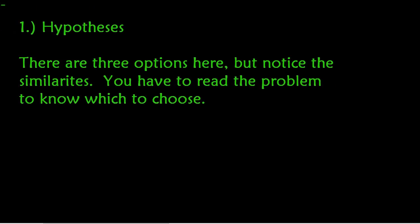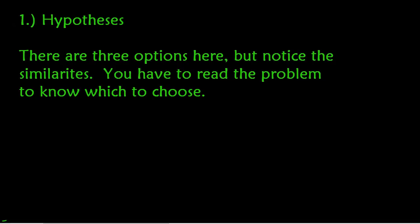Step one is the hypotheses. There are three options, but you'll notice a lot of similarities between them — you have to read the problem to know which to choose. The null hypothesis, written as H₀, is always the same: the claim is true, so the true proportion p = 0.20. The alternative hypothesis Hₐ has three options: the true proportion is greater than 20%, less than 20%, or simply not equal to 20%.